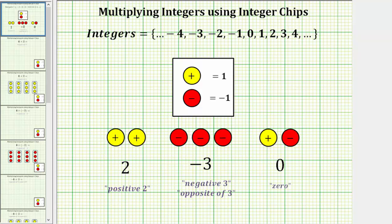Welcome to a lesson on multiplying integers using integer chips. For review, a positive chip equals positive one, and a negative chip equals negative one. Therefore, two positive chips equals positive two, three negative chips equals negative three, which we can also read as the opposite of three, and a positive chip and negative chip combine and simplify to zero.